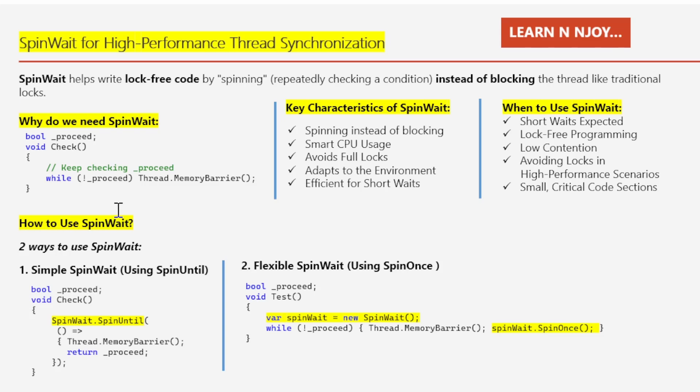Imagine you are waiting for a friend to finish using a computer, but there's no rule that only one person can check the computer. Instead of locking the door and blocking everyone else, you just keep glancing at the computer every few seconds. As soon as it's free, you can use it. Spinning means you keep checking if the computer is free; not blocking means you're not stopping anyone else from checking either.